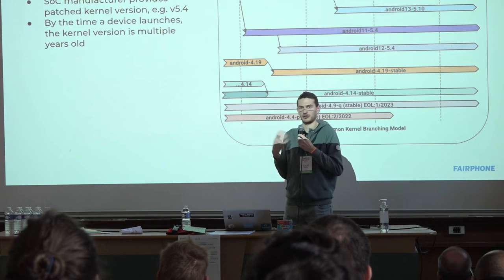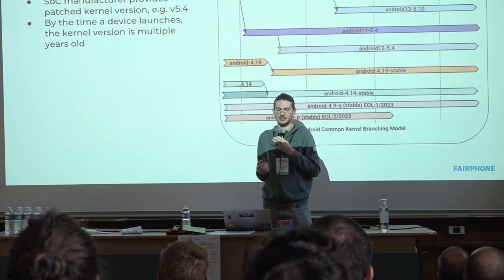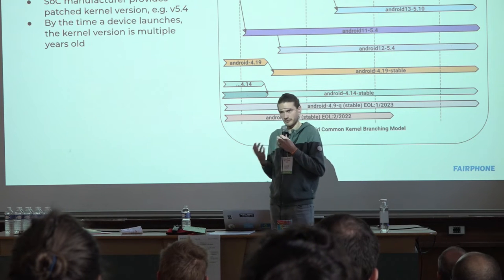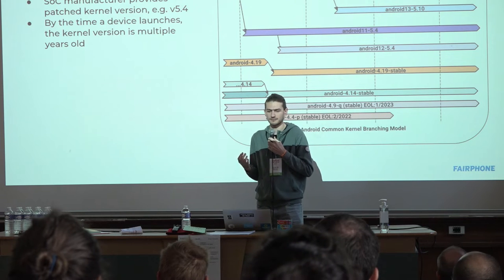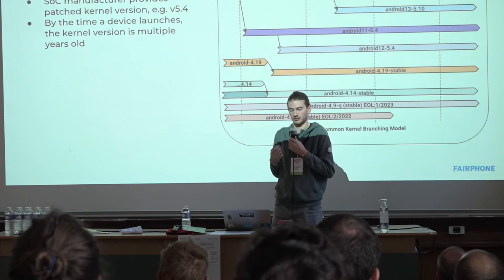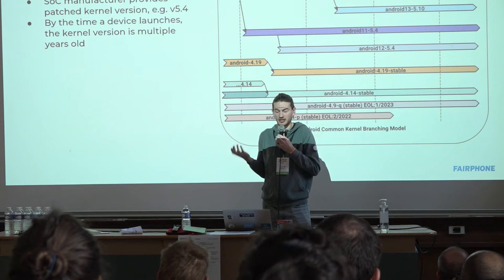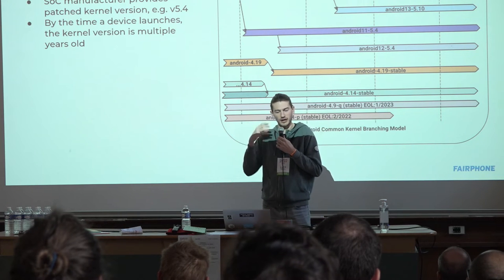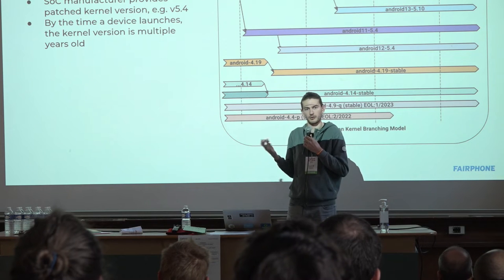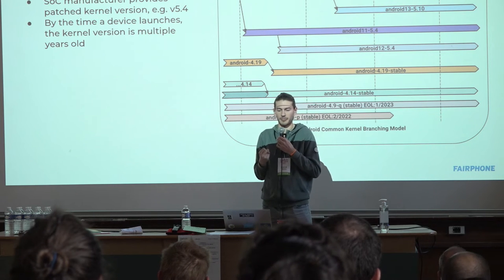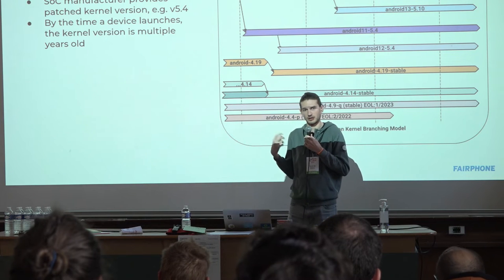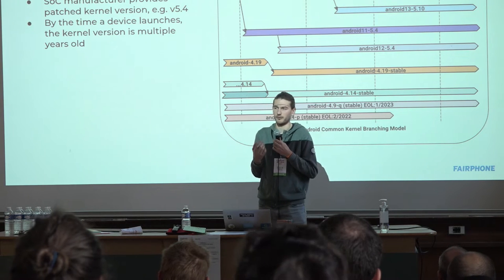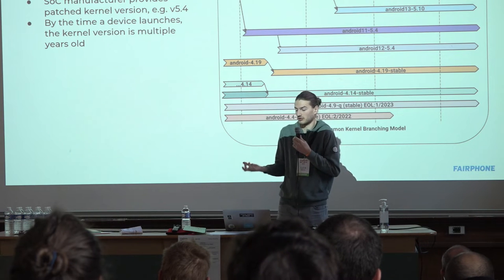Based on the branch created by Google, the SOC manufacturer takes this and adds support for their SOC on top. Then the device manufacturer gets this code base and puts their device-specific changes on top. This also means that by the time a device launches, the kernel is already multiple years old — and it's never really updated, because while mainline and LTS branches move forward, SOC manufacturers practically never update the kernel version for an SOC, so the device manufacturer can also never really update it.